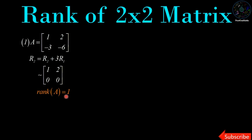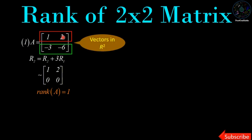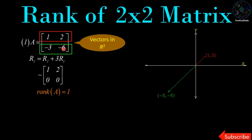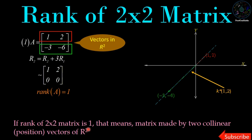Now we are going to understand the geometrical meaning of rank 1 for a 1×2 matrix. We consider every row as a vector of R2 — the first row [1, 2] and the second row [-3, -6] — and we plot them on the plane R2. We can observe that both position vectors lie on the same line, which is a multiple of [1, 2]. Therefore we conclude that if the rank of a 2×2 matrix is 1, the matrix is made by two collinear position vectors of R2.